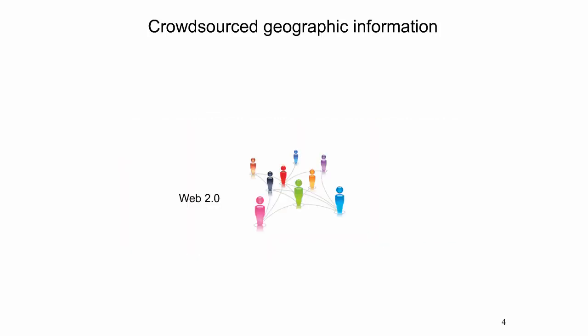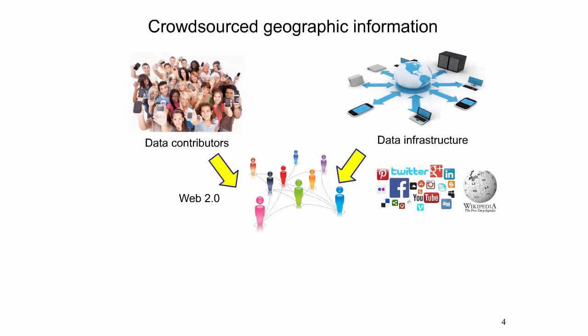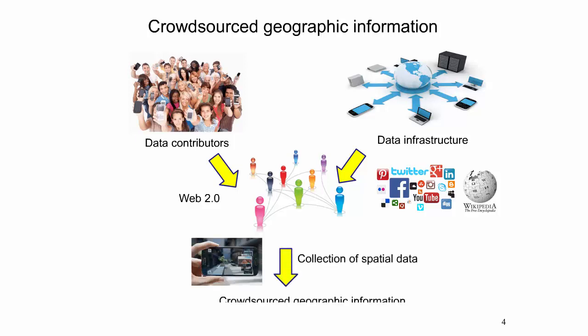The early World Wide Web was primarily one-directional; it allowed users to only view the contents of websites. The term Web 2.0 denotes a bi-directional collaboration in which users are able to interact with and provide information to central websites. Therefore, Web 2.0 denotes the wide range of innovative web applications that connect users with each other using data servers and online services. The applications allow users to create, store, share, and retrieve user-generated content, including crowdsourced geographic information.